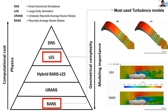Depending on the need, we choose the appropriate turbulence model. If we want fluctuations of flow, we use LES. If we just want the average, we use RANS, since RANS has a very low computational cost. LES has a very high computational cost. Based on this, we must carefully choose the type of turbulence model.